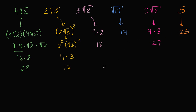Now let's order them from least to greatest. Comparing the squares — 32, 12, 18, 17, 27, 25 — 12 is the smallest. So two square roots of three is the smallest value. Next, 17 is the next smallest square, so the square root of 17 is next. Then comes 18, so three square roots of two is third.